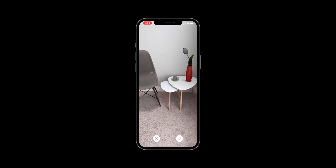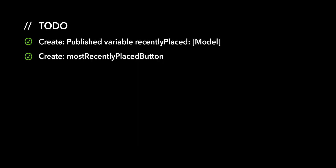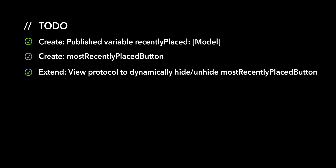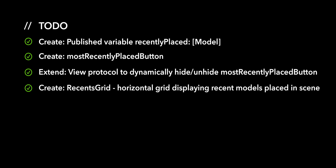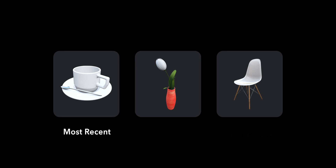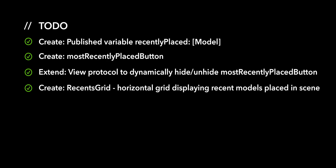We have several action items for this video. First, we'll create a published variable to keep track of recently placed 3D models in the AR view scene. Second, we'll create a most recently placed button that provides the user with a shortcut to quickly place multiple instances of the same 3D model in the scene. Third, we'll extend the view protocol by adding functionality to dynamically hide and unhide the most recently placed button. And finally, we will create a horizontal grid that displays an array of models for which the first element is the most recently placed model and the last element the least recently placed model. This array will be an ordered collection of unique elements.